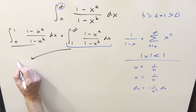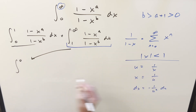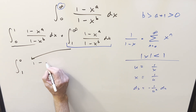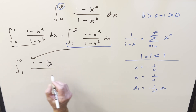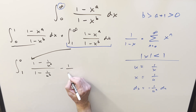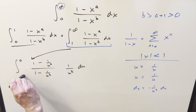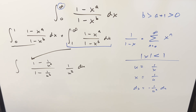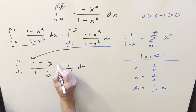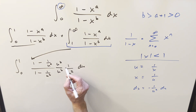Substituting into the integral from 1 to infinity: plugging infinity in gives an upper bound of 0, and plugging in 1 gives a lower bound of 1. The numerator becomes (1 minus 1/u) to the a, the denominator becomes (1 minus u) to the b, and dx becomes minus 1 over u squared du. We use the minus sign to flip the bounds so they go from 0 to 1. To clean up the denominator, we multiply through by u to the b.